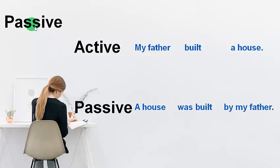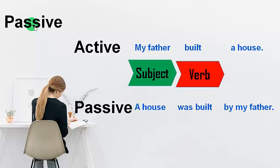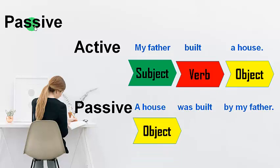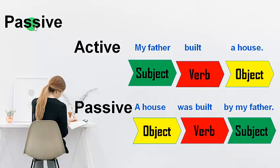My father built a house. And the passive voice of it is: a house was built by my father. So guys, the active — this is a regular sentence where we have a subject, a verb, and an object. What about the passive voice? We start the sentence with the object. After that you have the verb and 'by', and we finish with the subject — by my father. So: my father built a house — subject, verb, object. A house was built by my father — object, verb, subject.